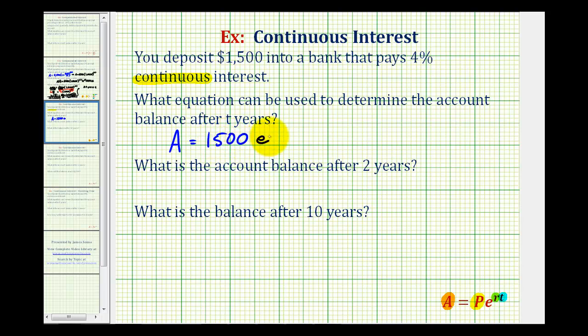Times E raised to the power of R times T. Again, R is the annual interest rate expressed as a decimal. 4% as a decimal would be 0.04 times T in years. We don't know T so it stays a variable.